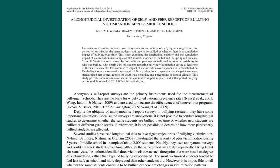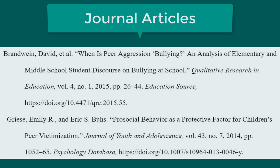Journal article citations follow this format: Author last name, comma, first name. If there are two authors, include a comma after the first name, the word 'and,' and then write the other author's first name and then their last name. If there are three or more authors, use the words 'et al.' after the first author's name. 'Et al.' is a Latin phrase that means 'and others,' and it replaces the other authors' names.